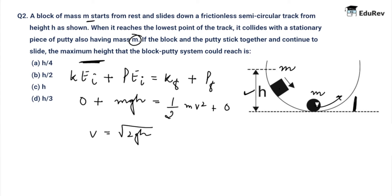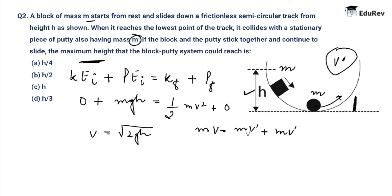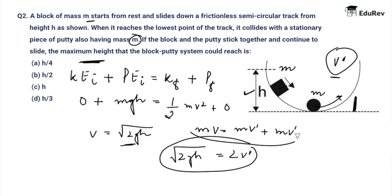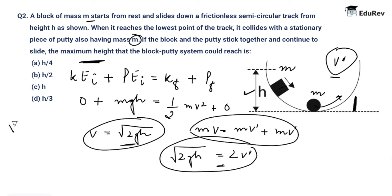Let the common velocity of both the block and the putty after collision be V dash. At collision, using conservation of momentum: MV equals MV dash plus MV dash, which gives MV equals 2MV dash. Substituting V equals under root of 2GH, we get under root of 2GH equals 2V dash. Therefore, V dash equals under root of GH by 2.